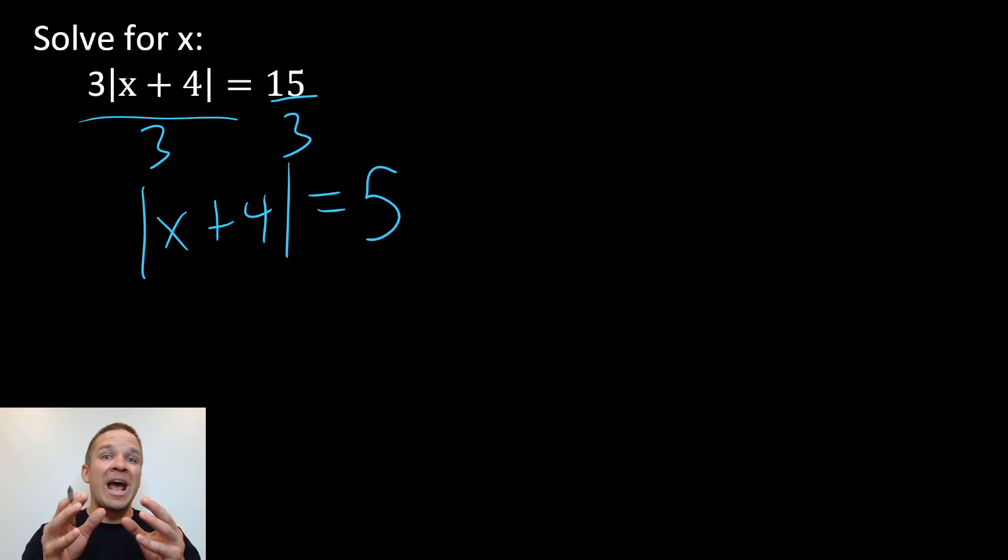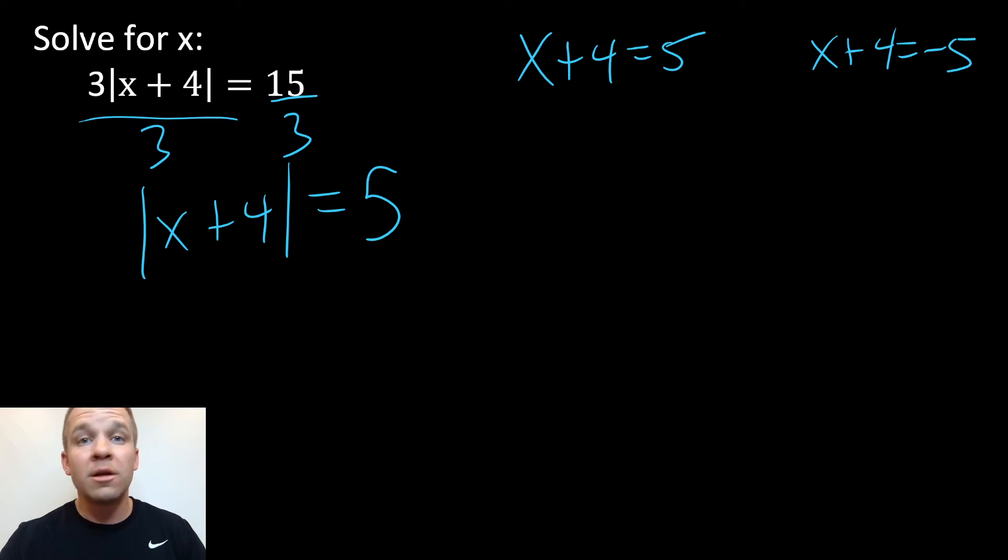Now, I have the absolute value by itself. I can split it up into two separate equations. So I'm going to have x plus four equals five, and I'll have x plus four equals negative five.